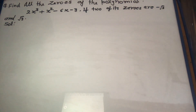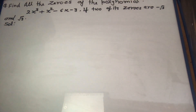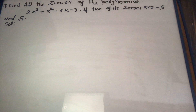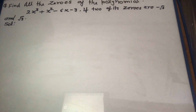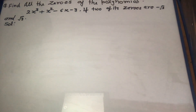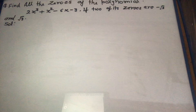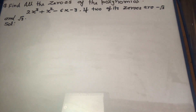Friends, welcome to our online study of mathematics. Today we will discuss mathematics of class 10th, chapter number 2: Polynomials. Today we will learn how to find the zeros if a polynomial is given and some roots are also given. Here is a question: if two roots of a polynomial are given, then find the other roots. Let us understand it.